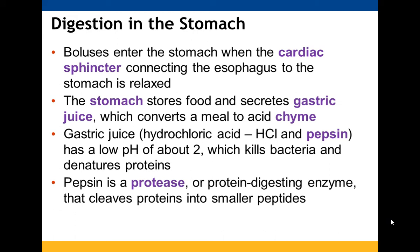Peristalsis helps bring boluses of food down into the stomach from the esophagus. The boluses can enter the stomach when the cardiac sphincter — the connection between the esophagus and stomach — opens. In the stomach, food stays there as it's starting to get digested by gastric juice, which is a mixture of hydrochloric acid and pepsin, an enzyme that helps break down proteins. So while the oral cavity starts breaking down carbohydrates, in the stomach we're starting to break down proteins. The gastric juice is very acidic, which helps break down bacteria and denature proteins so they're more easily broken apart.